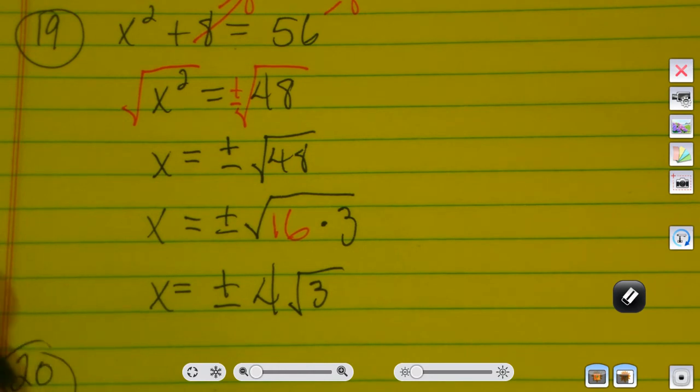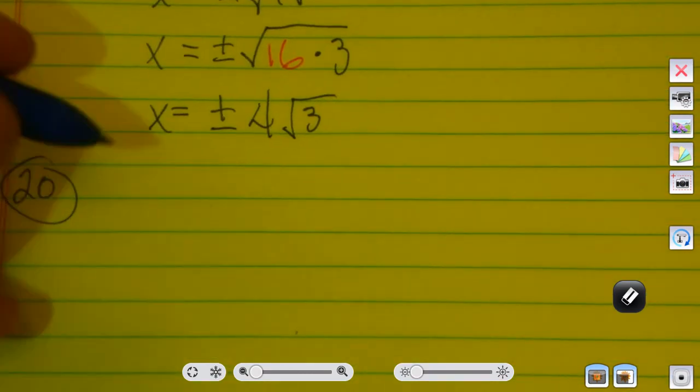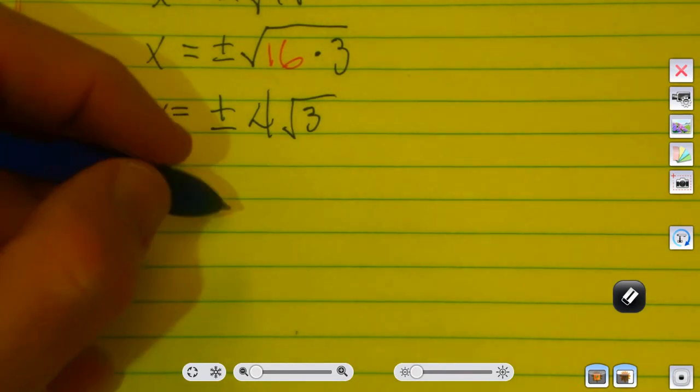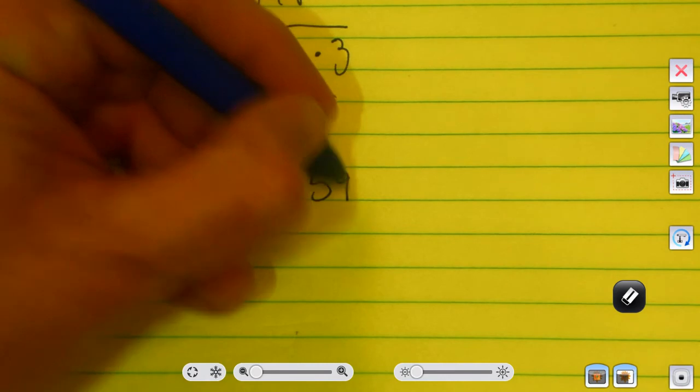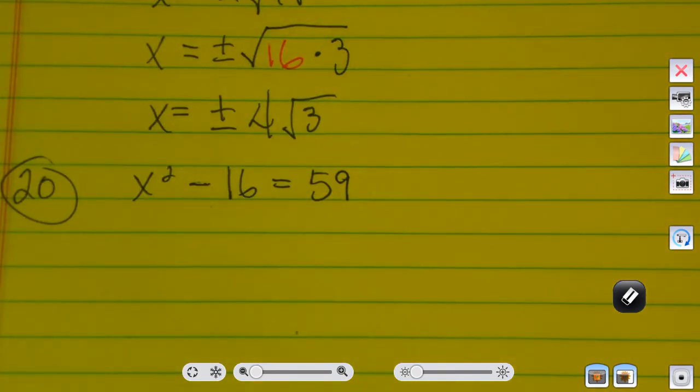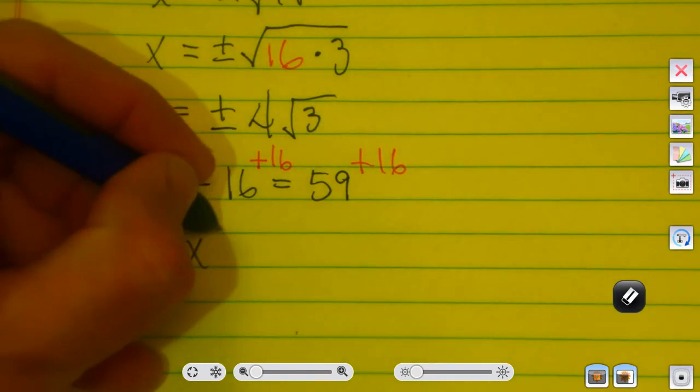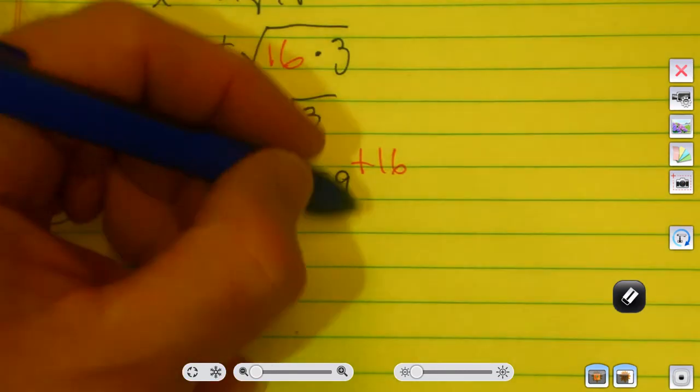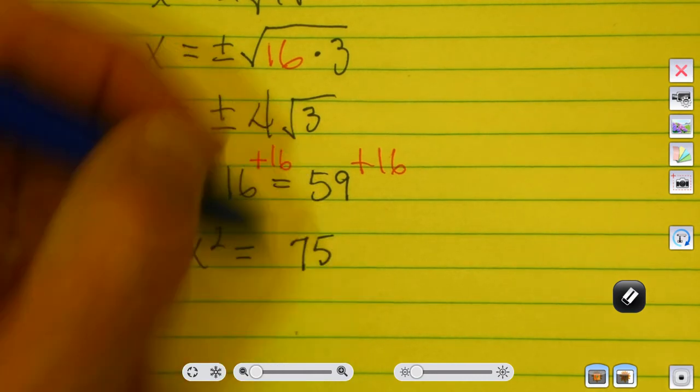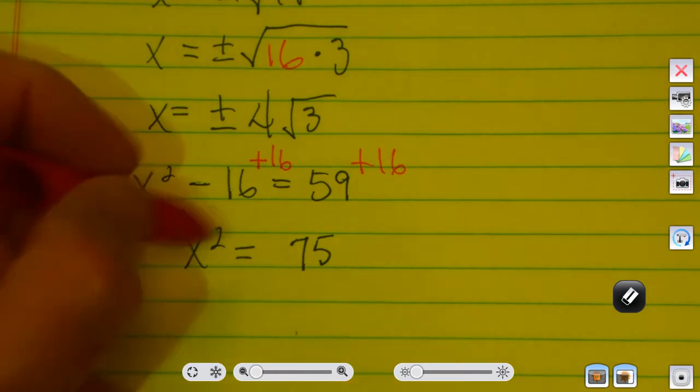Last but not least, number 20. Number 20 is x squared minus 16 equals 59. I know to add 16 to both sides. I'll get x squared is equal to 59 plus 16. When I add 59 and 16, I get 75.